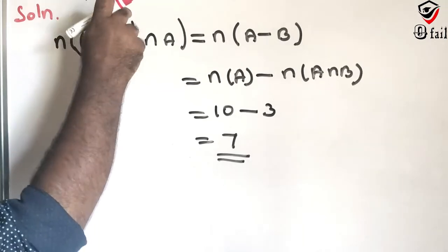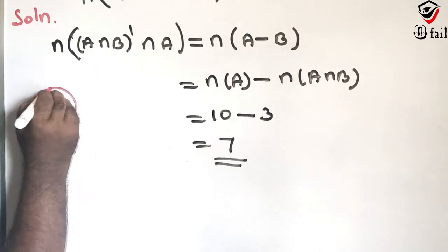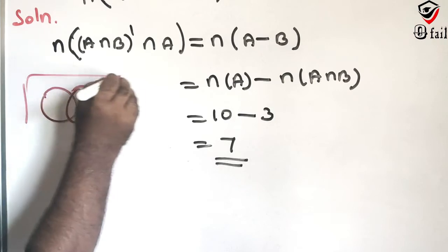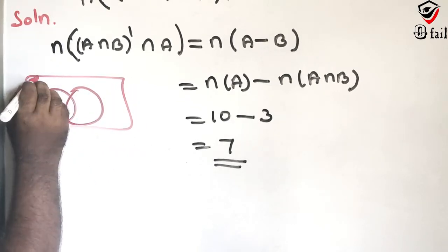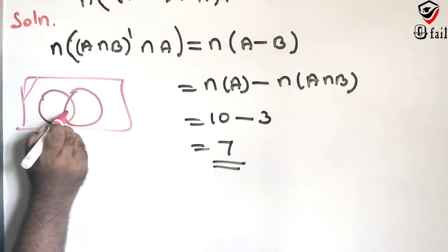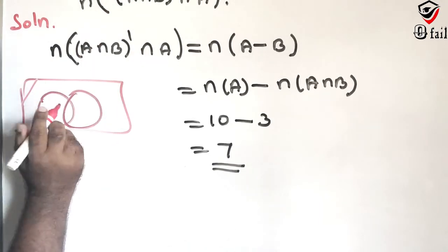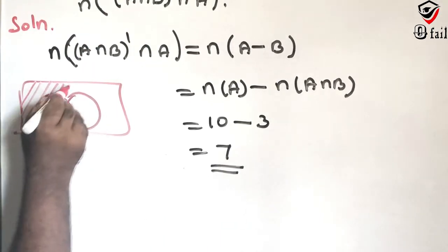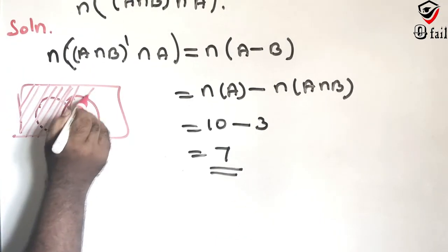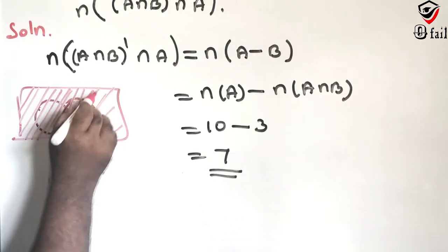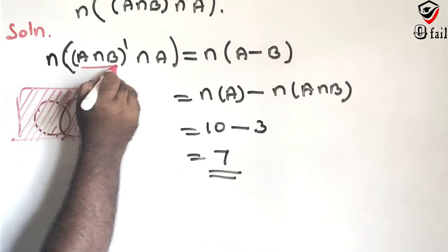A intersection B whole dash, if I talk about A intersect B, A intersect B would be this part and A except remaining. So this is how we dealt with this. This is A intersect B first, second is A.